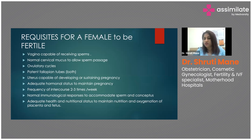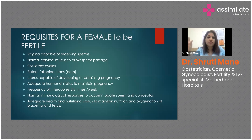Cervical mucus changes during every phase of menstruation. During the follicular (estrogen) phase, the mucus is dry and not sticky. Once ovulating, it becomes clear and thin. In the luteal phase, it becomes slightly sticky again. Normal cervical mucus should be present — it should not be too thick or acidic, as that would entrap the sperms.